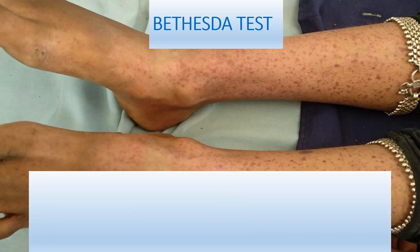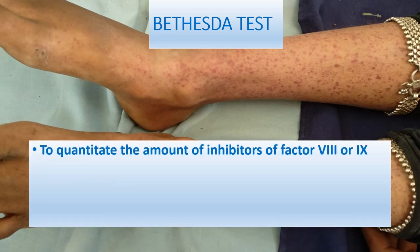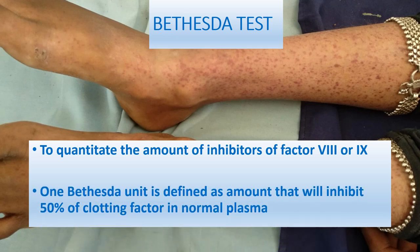The Bethesda test is used to quantitate the amount of inhibitors to factor 8 or 9 in patients being treated for hemophilia A and B who are receiving regular factor concentrate. If the patient has developed inhibitors, they will not respond to factor concentrate. One Bethesda unit is defined as the amount of inhibitor that inhibits 50% of the clotting factor in normal plasma.